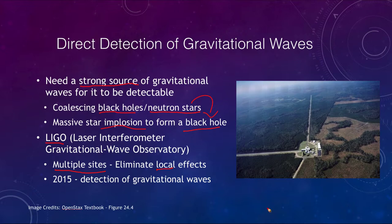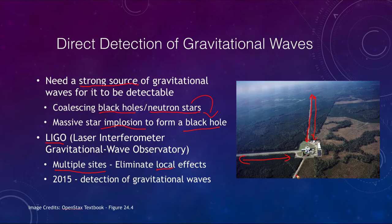What LIGO does is use very long arms to measure variations in their length. A laser signal is sent down and back across these arms a number of times, then the signal is split so it goes in two different directions. Those signals are then combined, and we look for minute changes in the path length that the light had to travel, which would be caused by passing gravitational waves. We're talking about less than atomic-size shifts in path length across arms that are kilometers long.